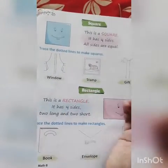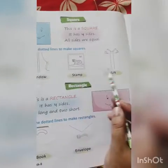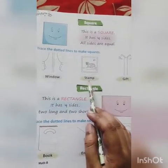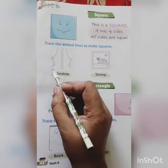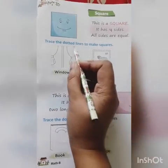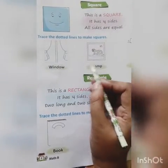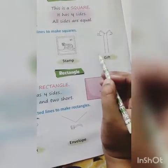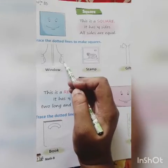Let's take some examples of square. Window, stamp, and gift — all three are in the shape of square. Let's count the sides: one, two, three, four. One, two, three, four. One, two, three, four. And all sides are equal.